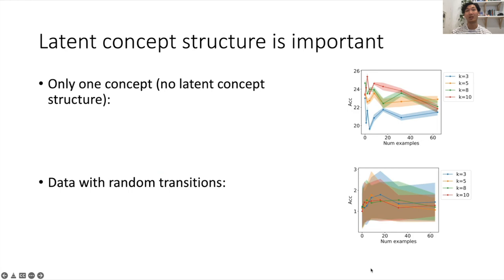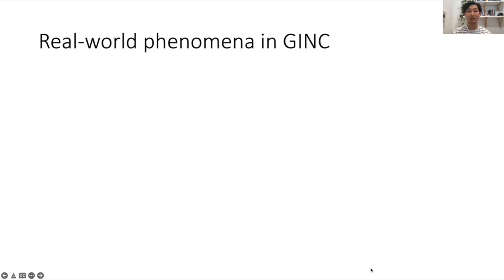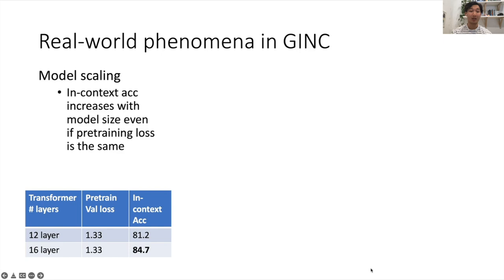We see a number of real-world phenomena in GINC as well. We find that in-context learning accuracy increases with the model size, even if the pre-training loss is the same. So there's a benefit to model scaling.